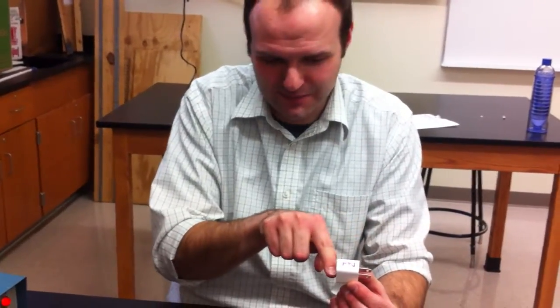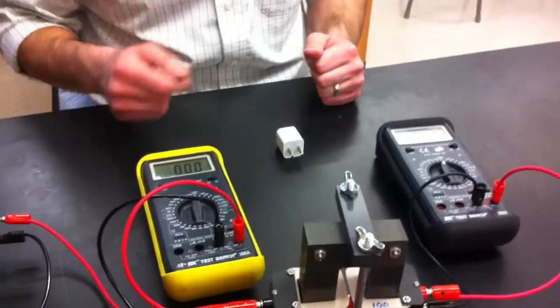So it takes in 120 and then it steps it down to 5 volts. And so what goes up, then? If the voltage is going down, what goes up? We'll pause so we can answer at home.